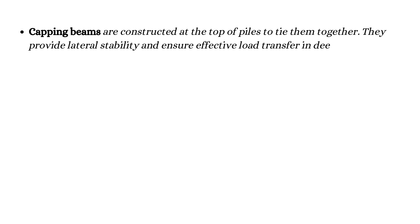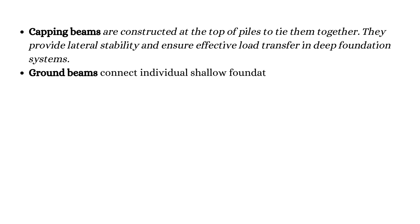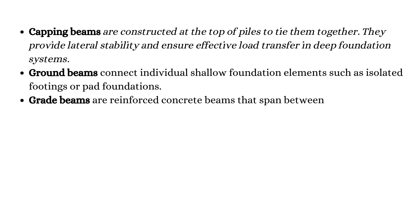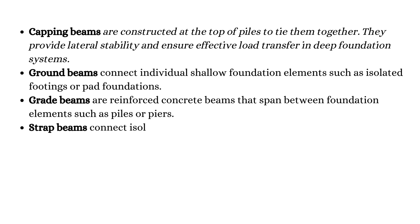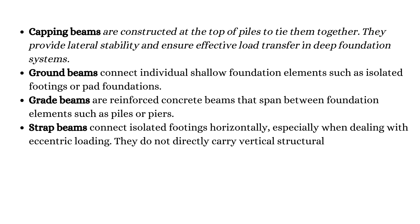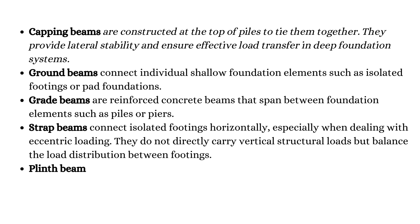Ground beams connect individual shallow foundation elements such as isolated footings or pad foundations. Grade beams are reinforced concrete beams that span between foundation elements such as piles or piers. Strap beams connect isolated footings horizontally, especially when dealing with eccentric loading — they do not directly carry vertical structural loads but balance the load distribution between footings. Plinth beams are constructed at the base of walls, just above ground level, supporting wall loads and acting as a tie between columns to resist differential settlement.